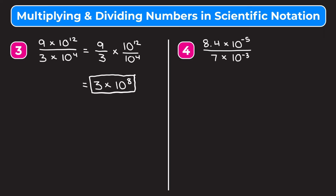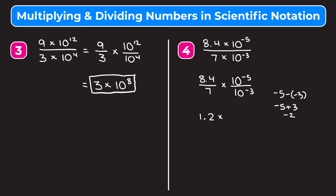Example four is 8.4 times 10 to the negative fifth over 7 times 10 to the negative third. We split it into 8.4 over 7 times 10 to the negative fifth over 10 to the negative third. Thinking of 8.4 divided by 7 as 84 divided by 7 gives us 1.2. Subtracting the exponents: negative 5 minus negative 3 is negative 5 plus 3, which is negative 2. Our answer is 1.2 times 10 to the negative second, already in scientific notation.